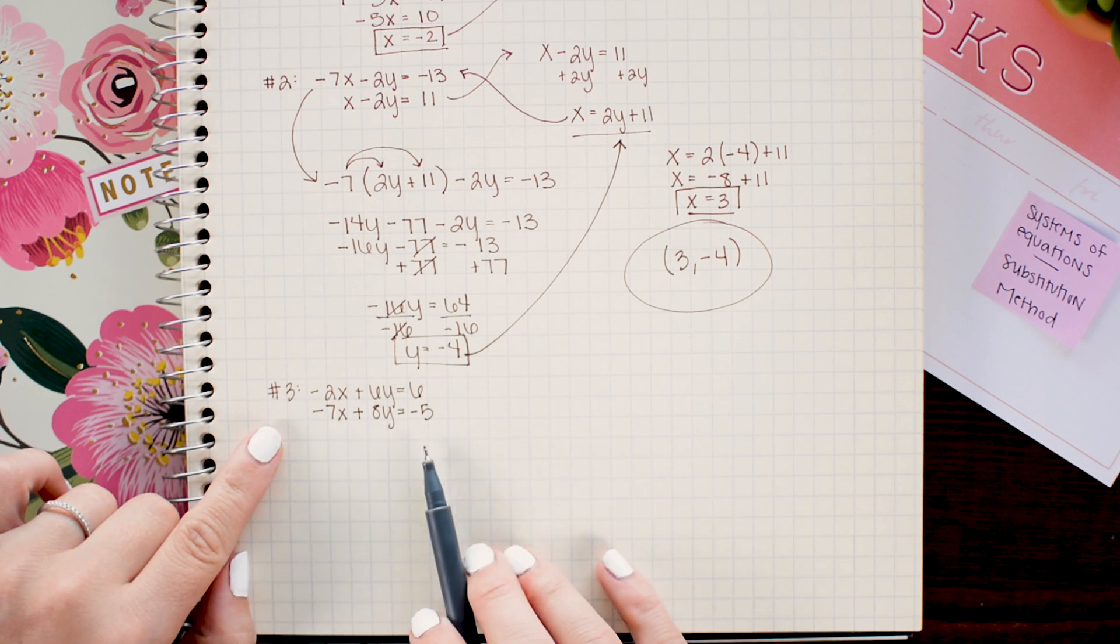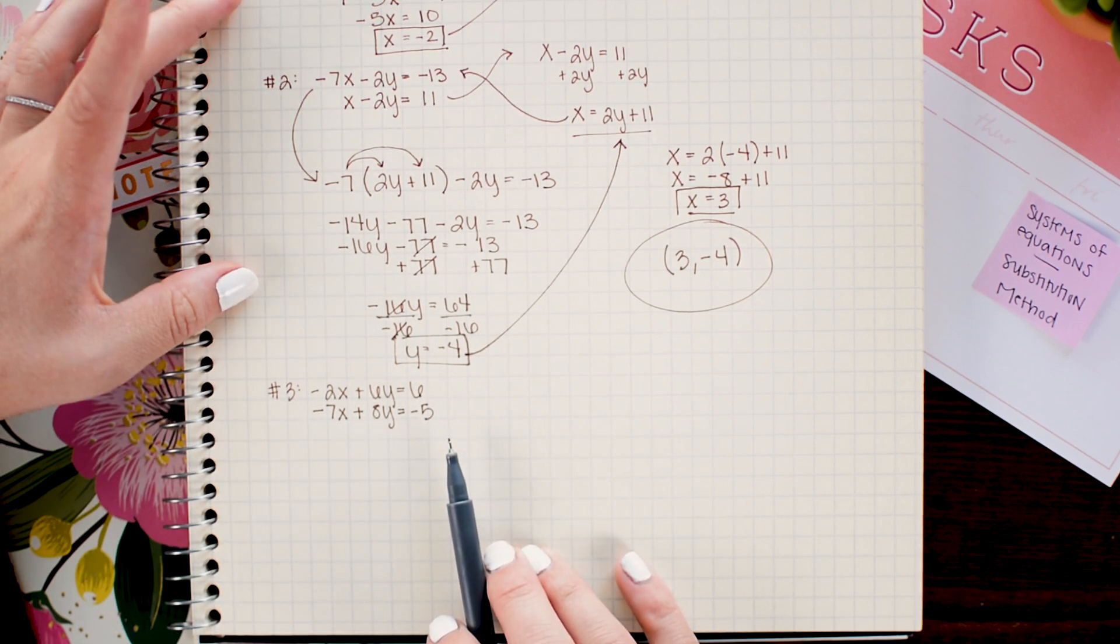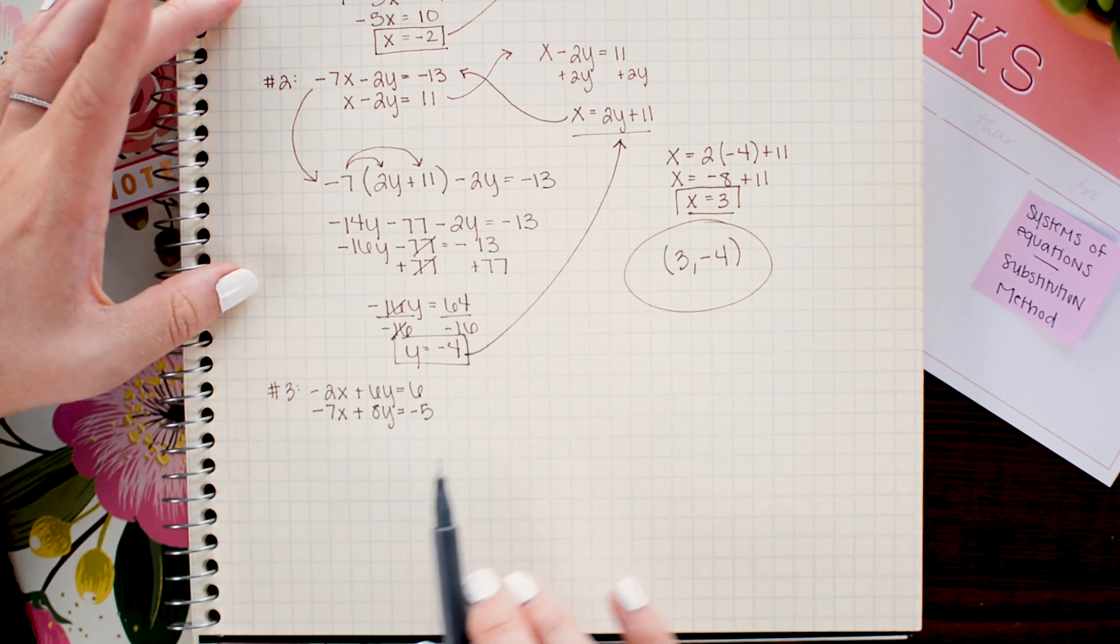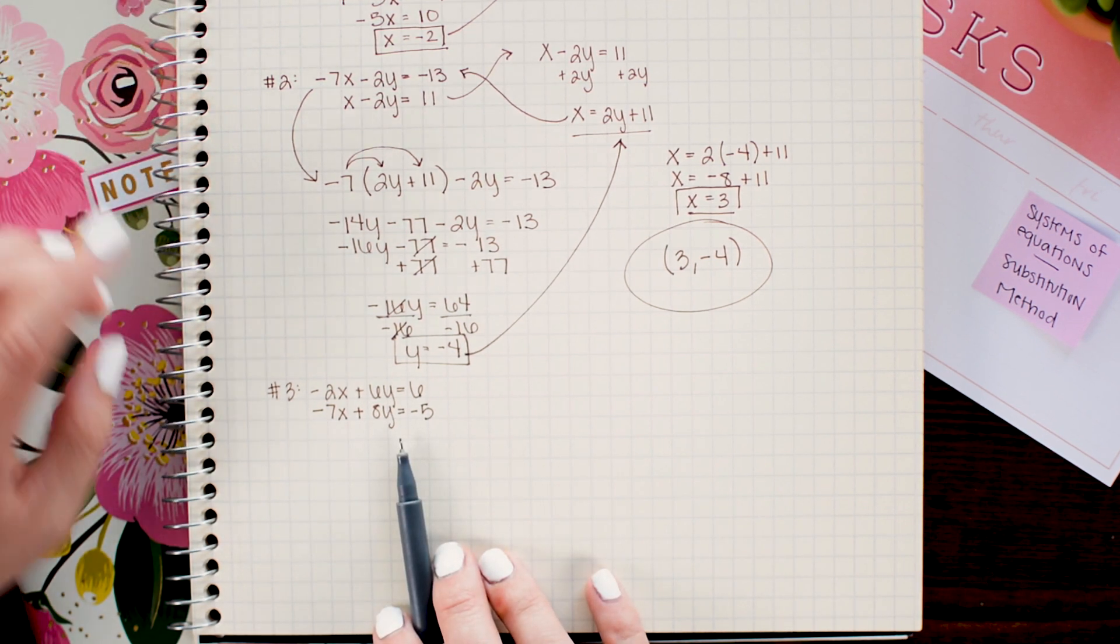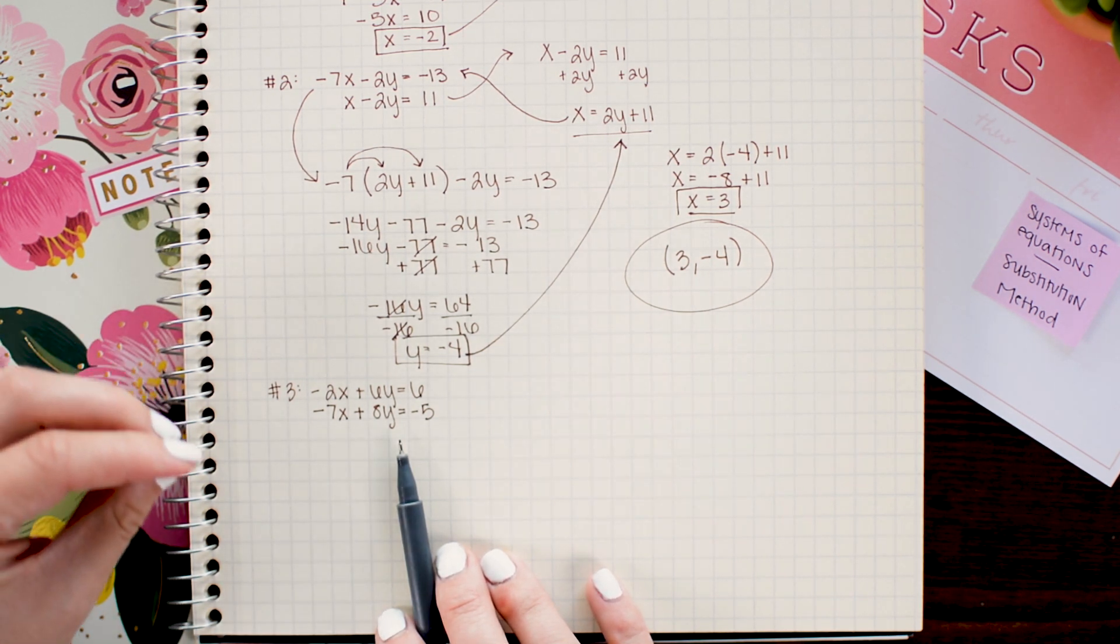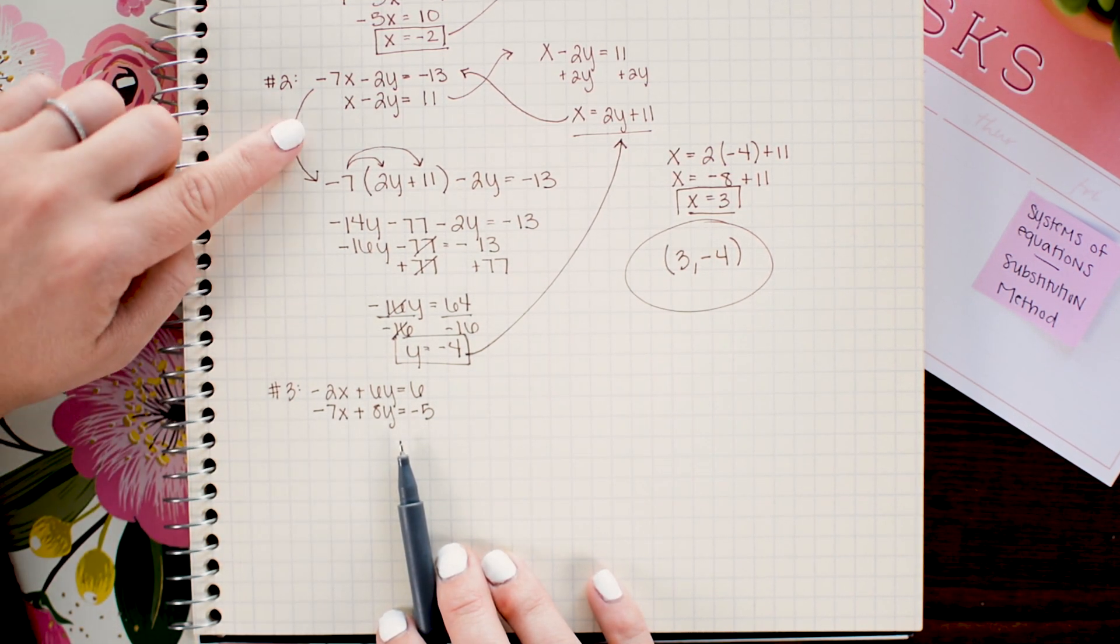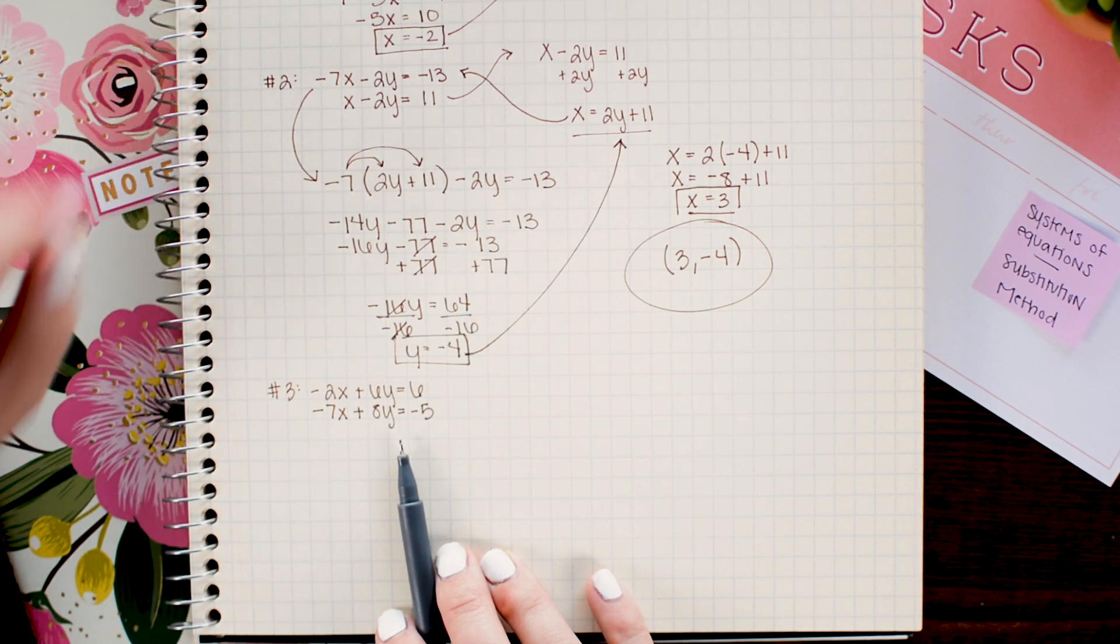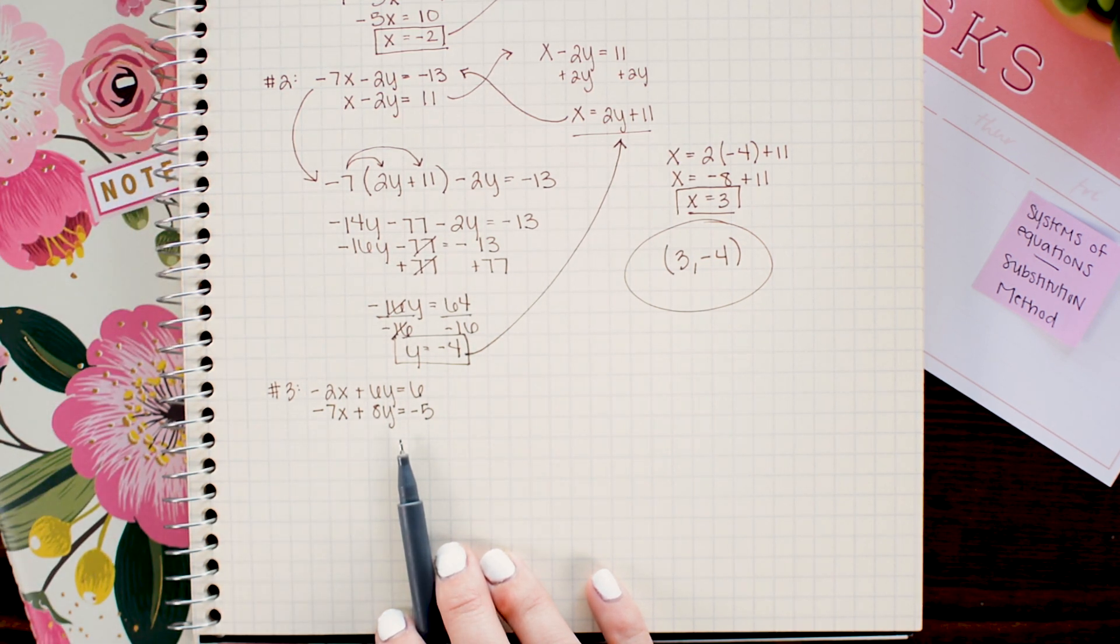So in this final problem we are going to approach it just like we did in the last two problems. Now the only difference between this problem and the previous problems is that the numbers aren't quite as friendly. There is no variable that is lacking a coefficient like we had in the first two examples. So I'm just going to pick whichever variable I want to solve for and I'm going to make my decision based off of what looks like it will be the easiest.